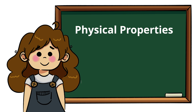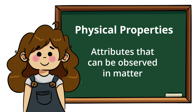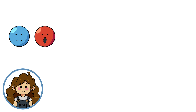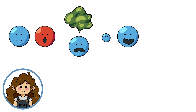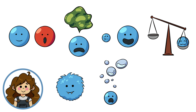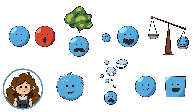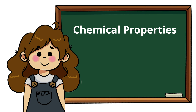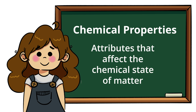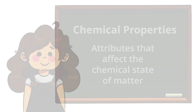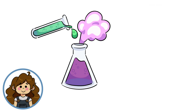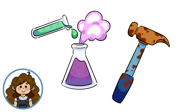Physical properties are attributes that can be observed in matter. Some examples of physical properties include color, odor, size, weight, texture, boiling point, and shape. On the other hand, there's chemical properties. Chemical properties are attributes that affect the chemical state of matter. For example, one chemical property may have the ability to combine with another element in a chemical reaction, like how water and iron combine to form rust.